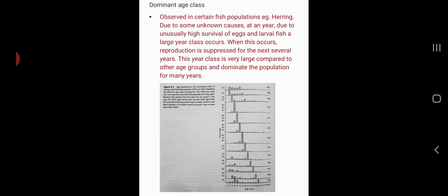An interesting phenomenon is seen in certain fish populations, for example herrings. Due to some unknown environmental conditions like La Niña, in a particular year unusually high survival of eggs and larval fish takes place, and a large year class of the fish population is formed. When this occurs, reproduction is suppressed for the next several years. This year class is very large compared to other age groups and dominates the population for many years.